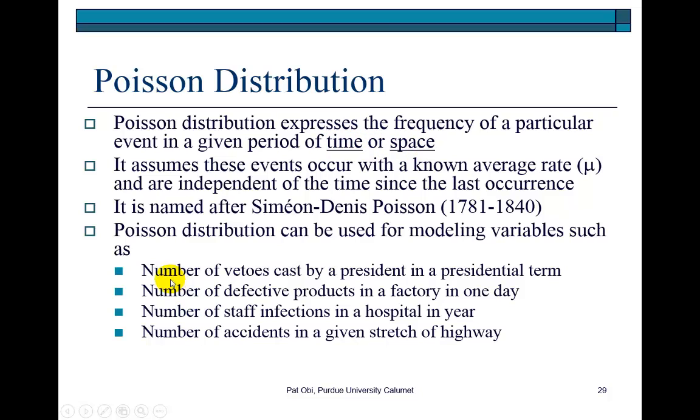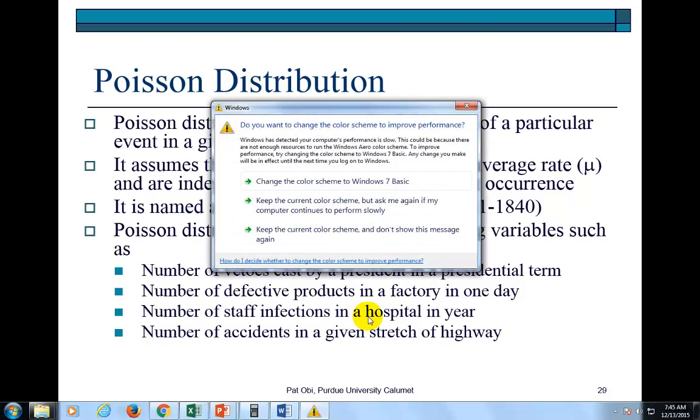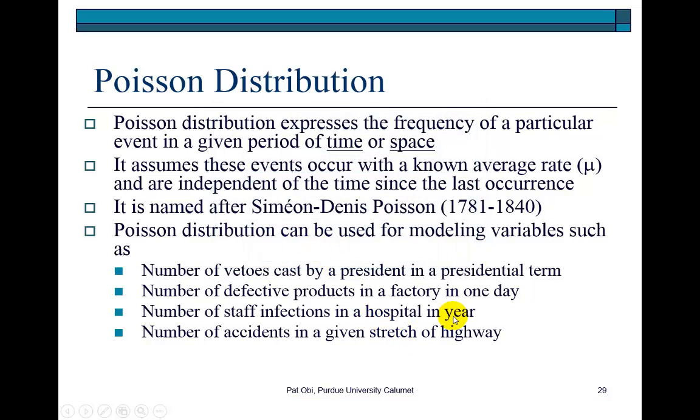Examples include the number of vetoes cast by presidents in a presidential term, the number of defective products in a factory produced in one day, the number of staph infections in a hospital in a year, and the number of accidents in a given stretch of highway.